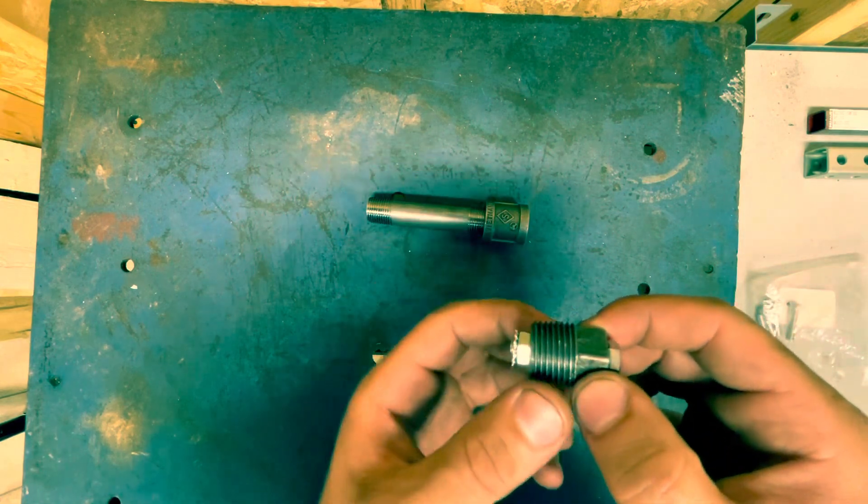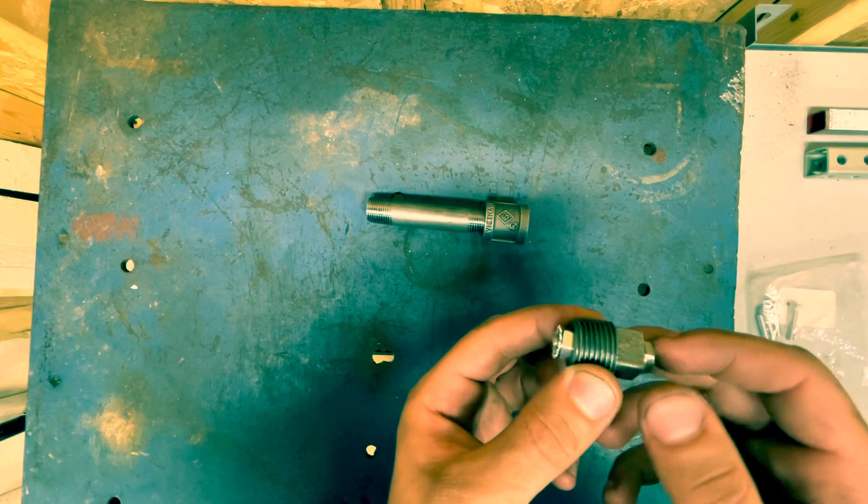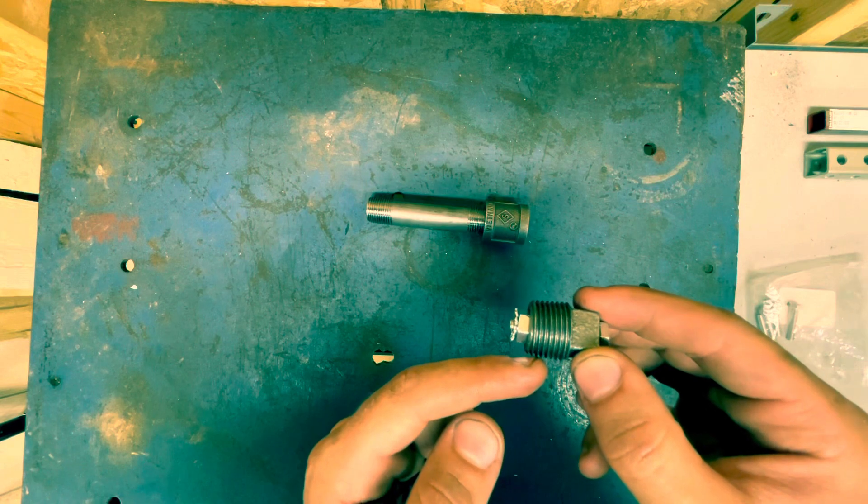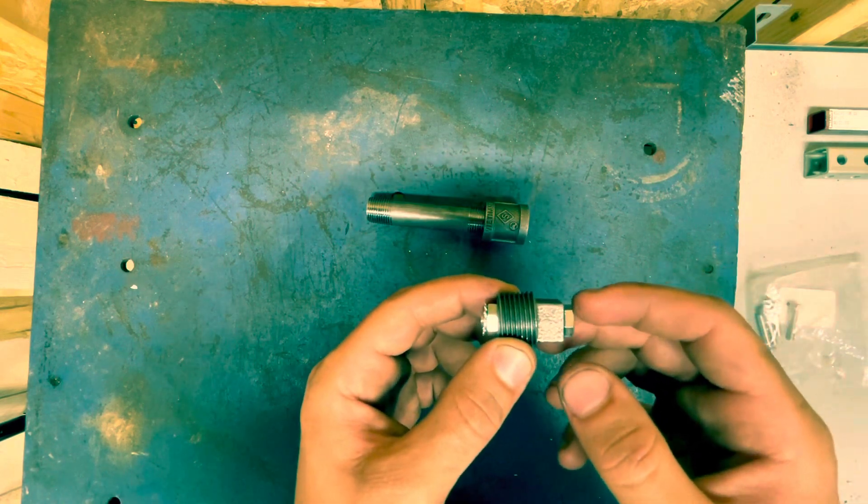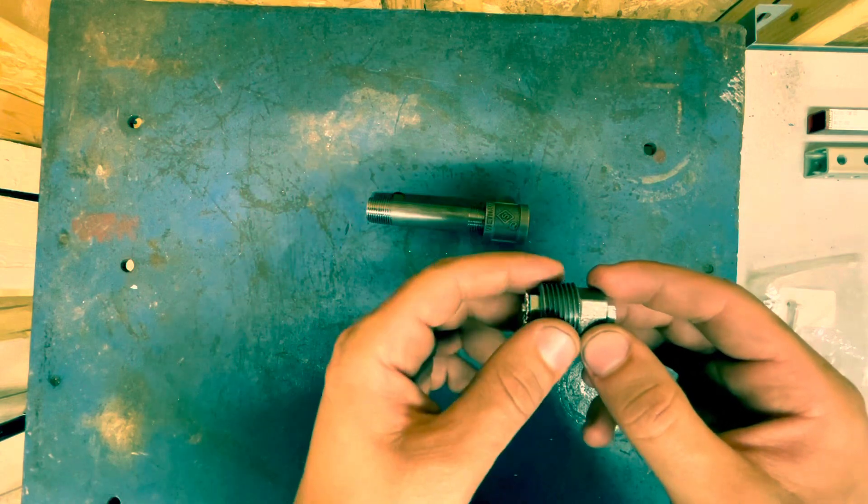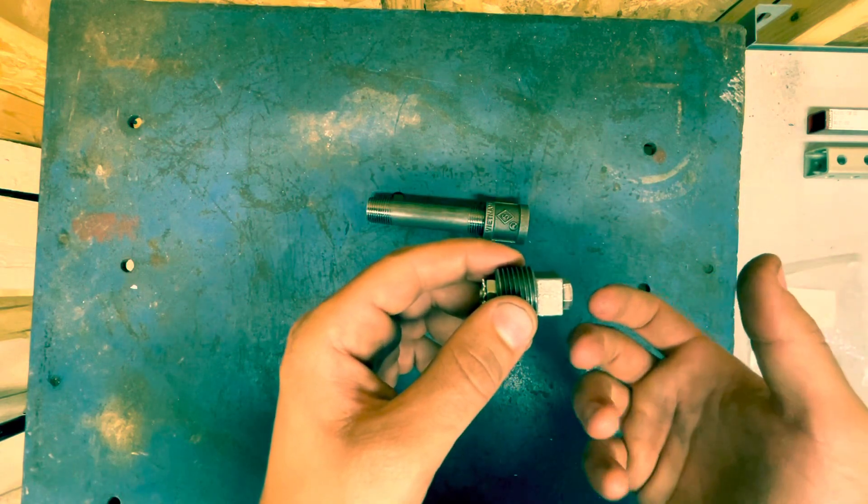But then if you take a wrench and crank down on the back of this, it'll actually pull this bolt all the way back inside there. So then it's very easy to, it'll make this flush and that'll give you a flat backing plate for the back of your shell to rest up against...